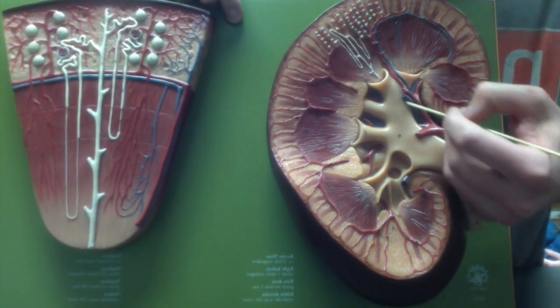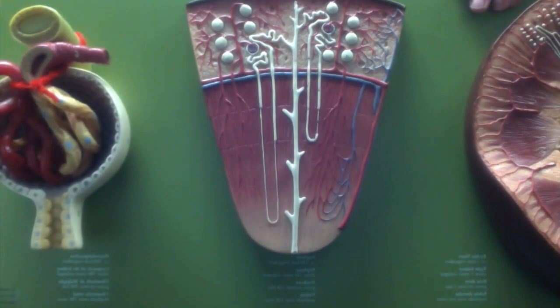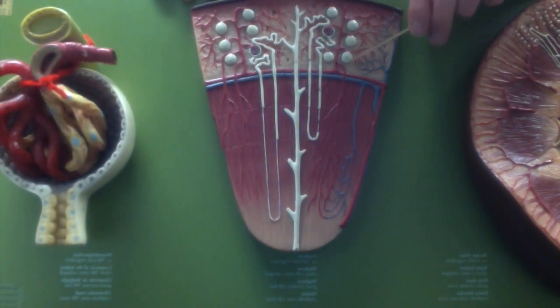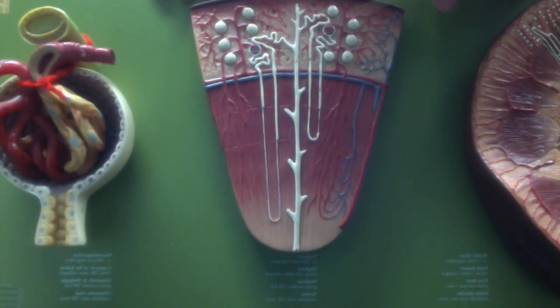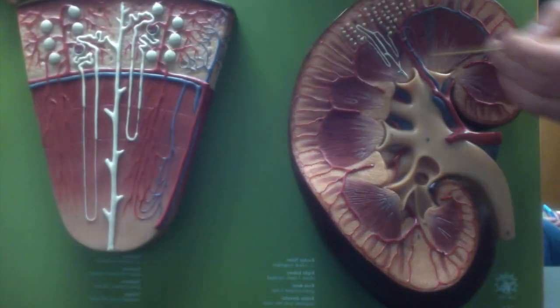In addition, we have the renal arteries and renal veins. Now we're going to cover the nephron, the functional unit of the kidney. First thing you need to know: all these white dots are renal corpuscles.